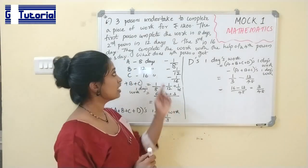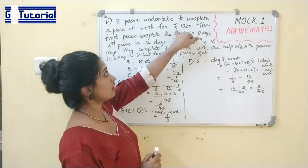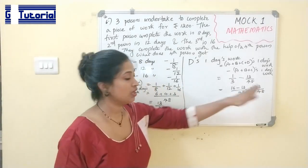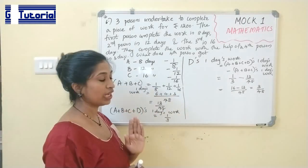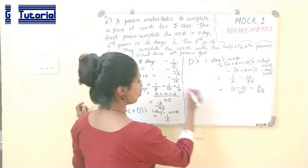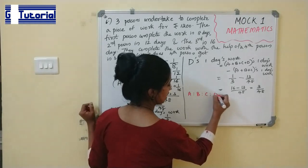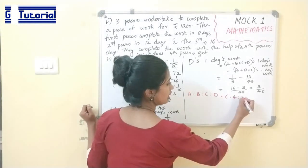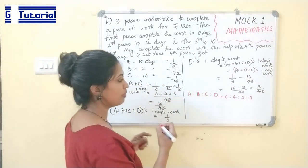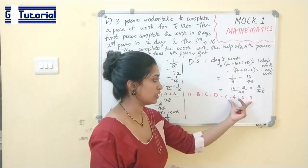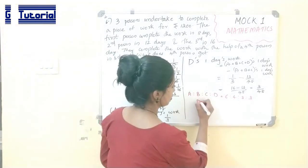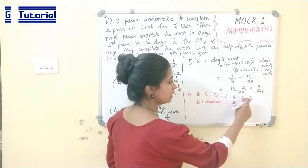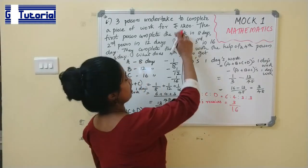What does the fourth person get? The total money is Rs. 1200. The work done by each is proportional: A = 6/48, B = 4/48, C = 3/48, D = 3/48. The ratio is 6 : 4 : 3 : 3, totaling 16 parts. D's share = 3/16 of Rs. 1200.